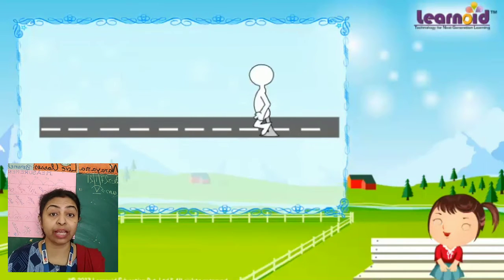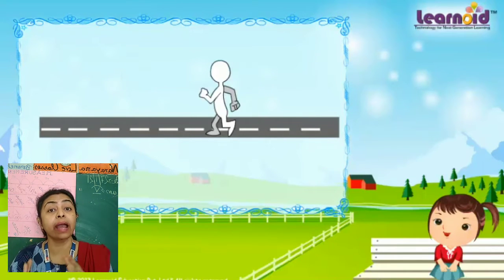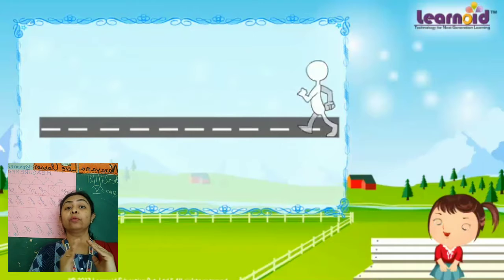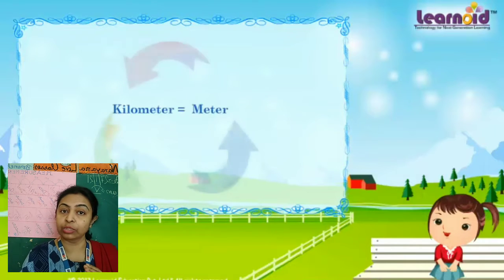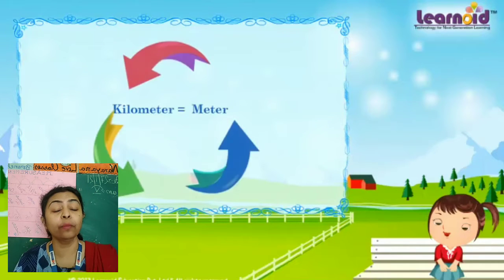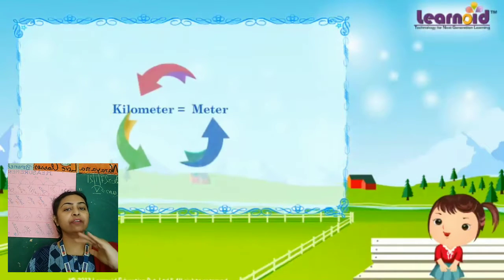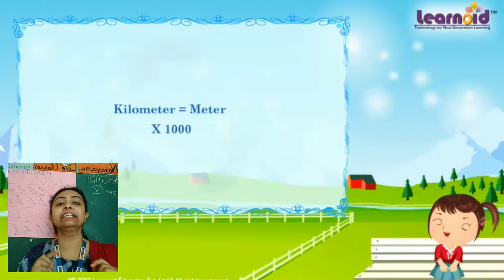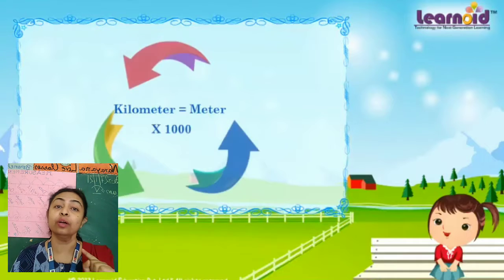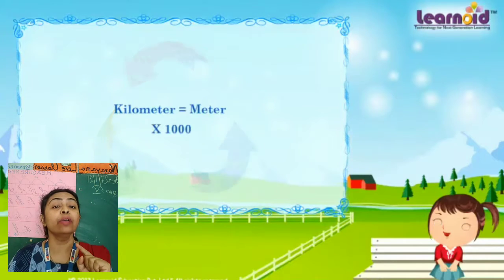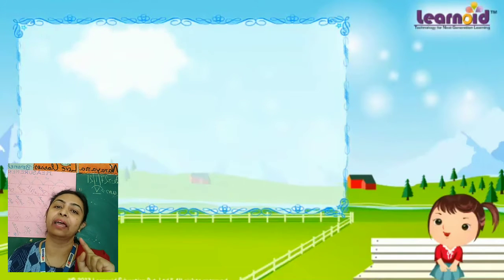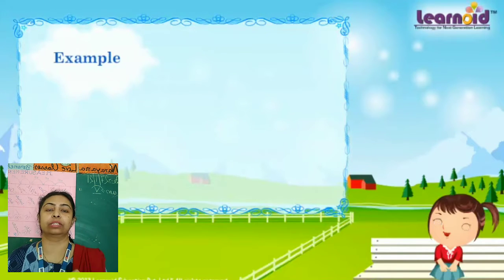So what are we doing? We are multiplying by 1000 — kilometer to meter. To convert kilometers to meters, we multiply by 1000.